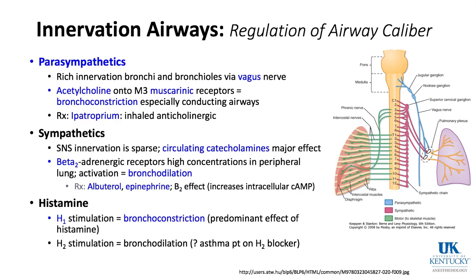Histamine in anaphylaxis stimulates the H1 receptor, causing bronchoconstriction. H2 stimulation causes bronchodilation — hence the concern that giving an H2 blocker to an asthmatic could block this bronchodilatory effect. The graphic shows the vagus nerve and sympathetic nerves supplying the lung, the phrenic nerve (C3, 4, 5) supplying the diaphragm, and the intercostals supplying the muscles of the chest wall.